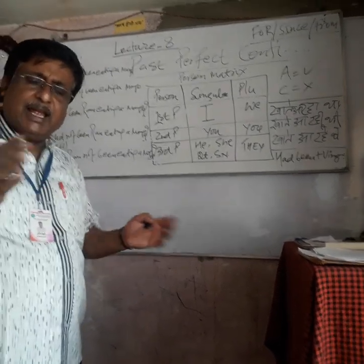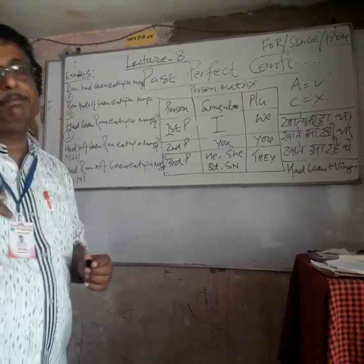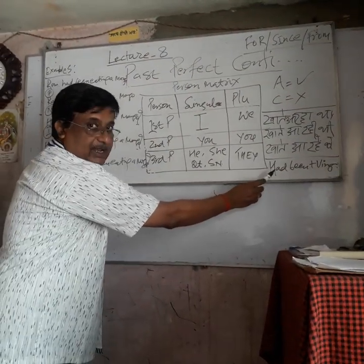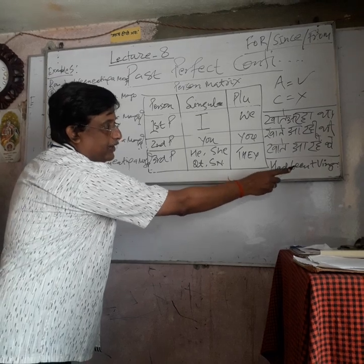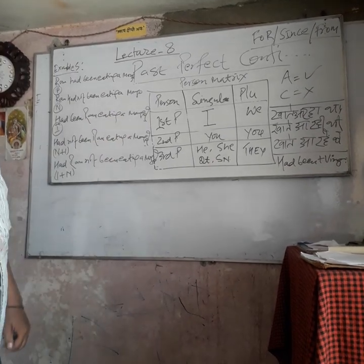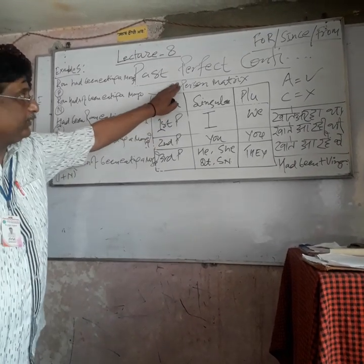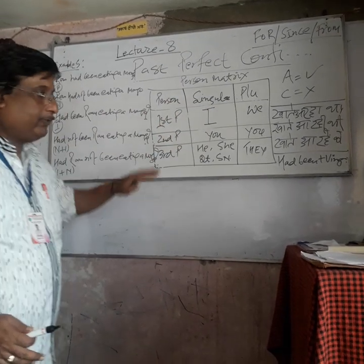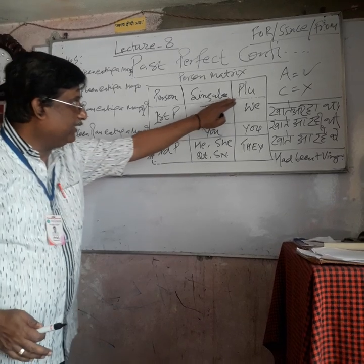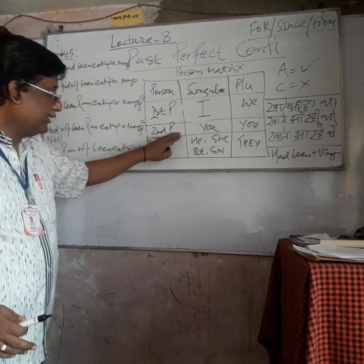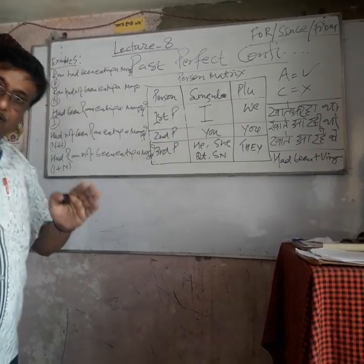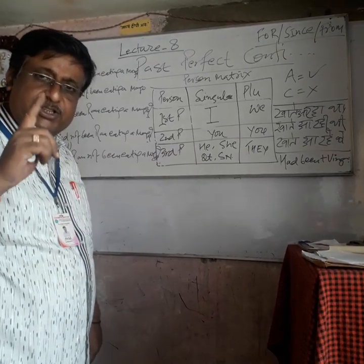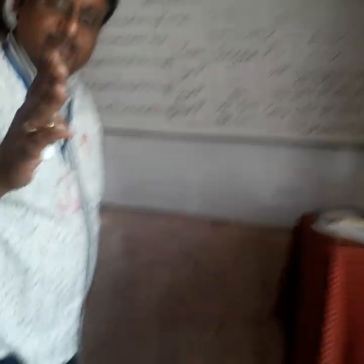So we simply add had been + V + ing. I have plotted the personal matrix here — the person singular and the plural. First person singular is 'I', plural is 'we'. Second person singular and plural both is 'you', whereas third person singular and plural is 'he/she/it/they'.